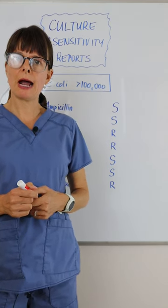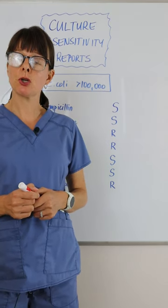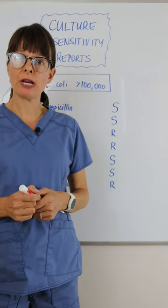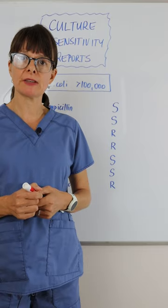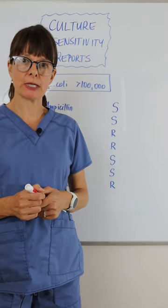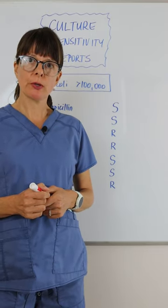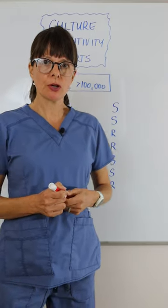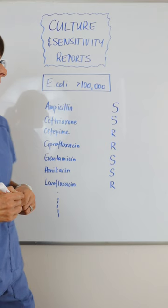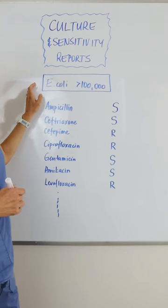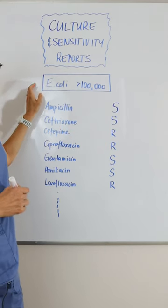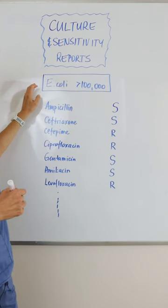Today, let's explore how to interpret and read a culture and sensitivity report. So when you get a culture report back, it'll first tell you whatever bacteria was identified. In this case, it was E. coli.